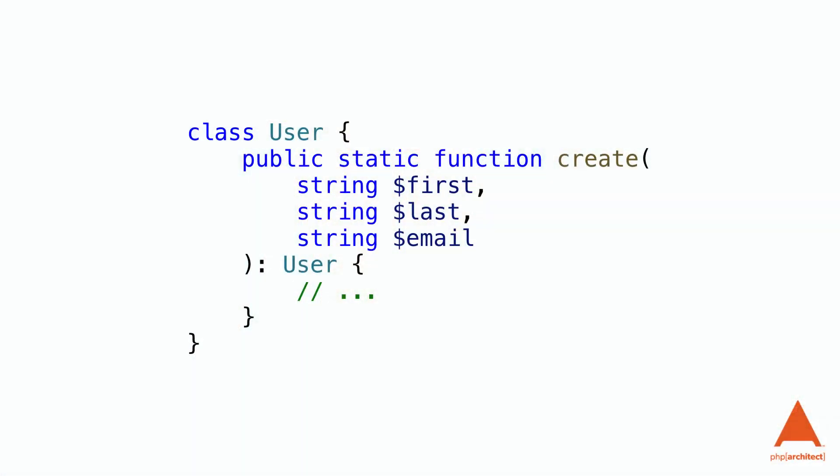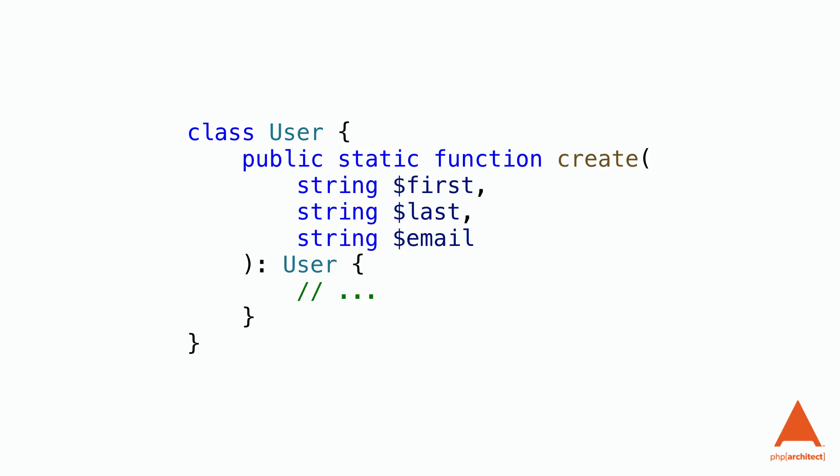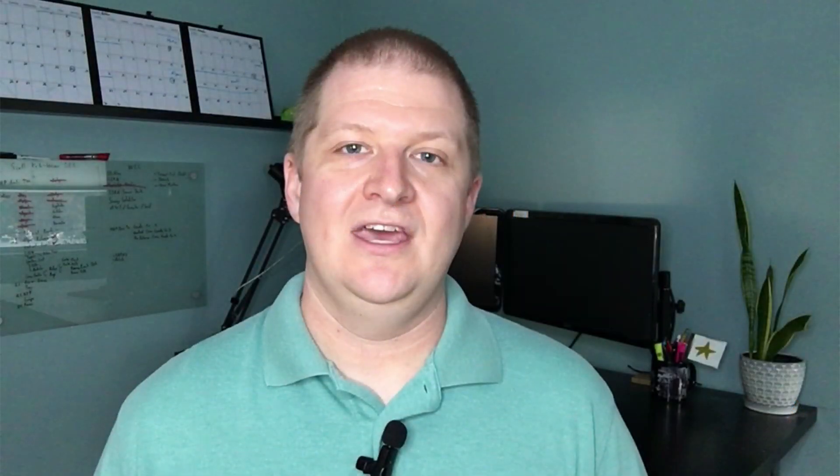For example, you might have a function to create a user. Notice that we're using type parameters — I love them because they help reduce errors and they help our IDE help us. Then in a separate file, we can call the function. Unfortunately, we made a mistake. Did you see the error? We switched the parameters and the email is invalid. Even though we use type parameters, there's no way to prevent this. Or is there?